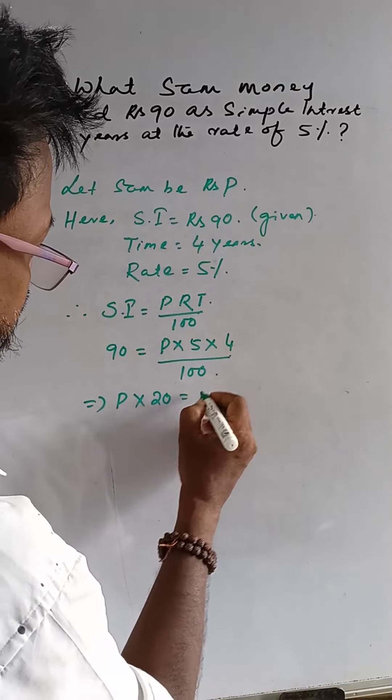Then the sum of money is rupees 450. Excuse me. The money is 450 rupees.